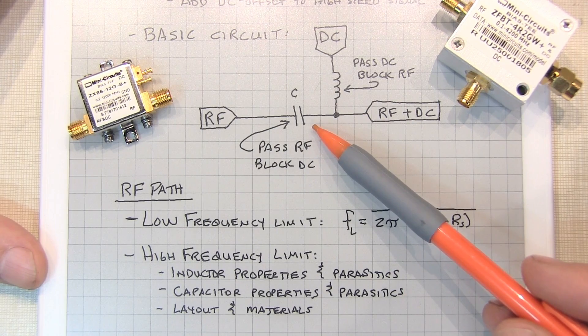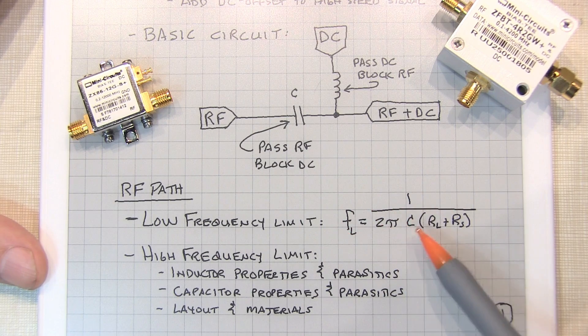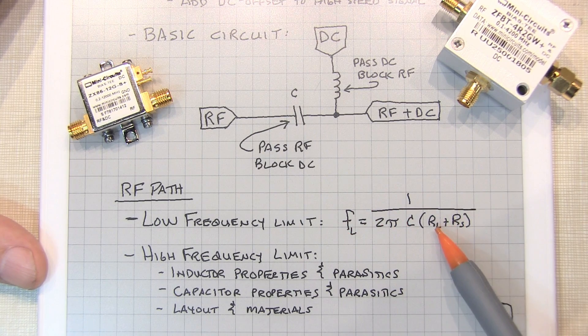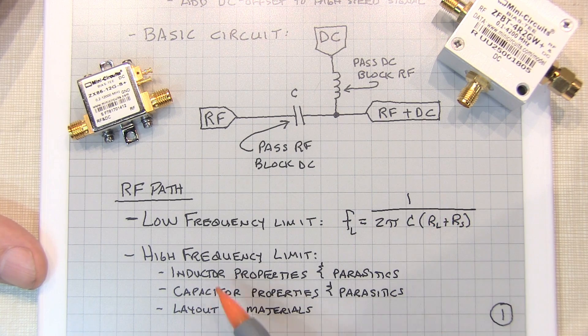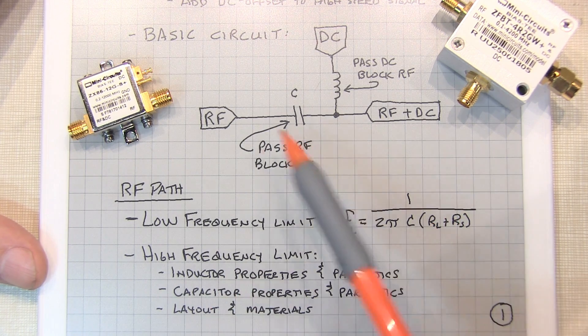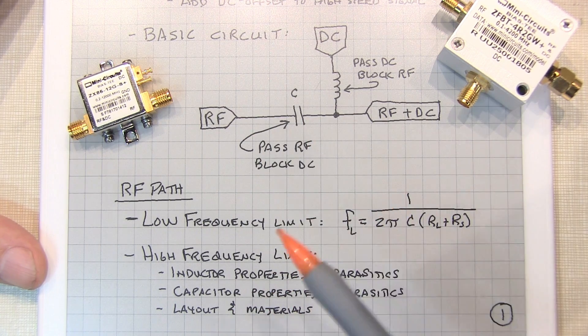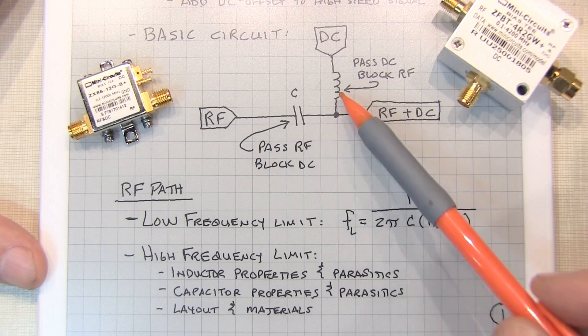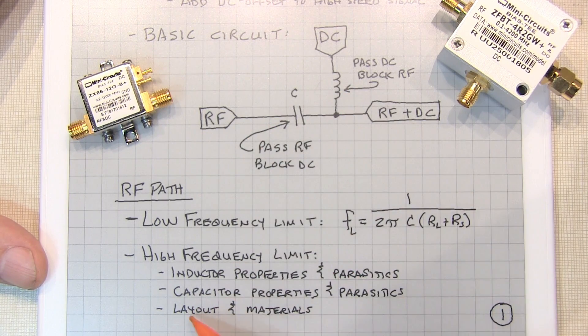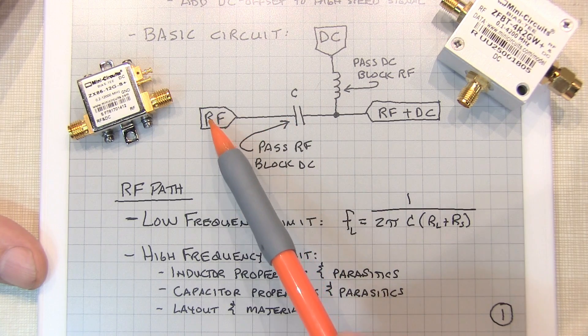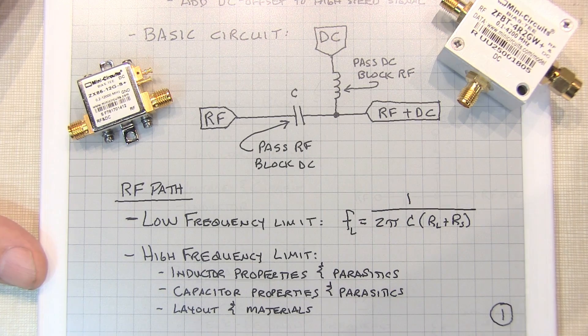The series capacitor in the RF path will determine the low frequency operating limit by simply this formula 1 over 2πRC where R is the combination of the load impedance and the source impedance. The high frequency limit is you might say well that should just work to extremely high frequencies. The reality is is that the inductor properties and the capacitor properties and their parasitics and the layout and materials used are really going to determine the high frequency performance or how high in frequency the RF path can go.